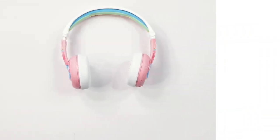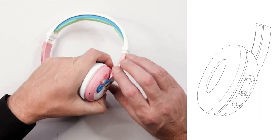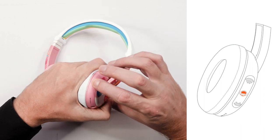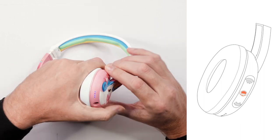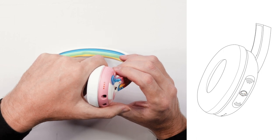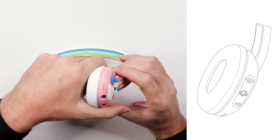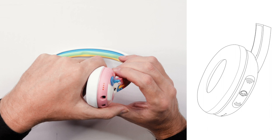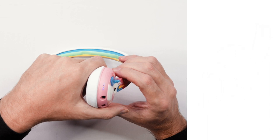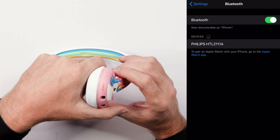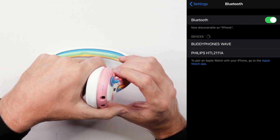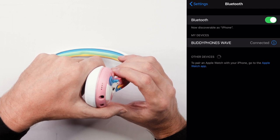Power on your BuddyPhones Wave by pressing the multi-function button for two seconds. The LED lights will flash red and blue to let you know the headphone is in pairing mode. Switch on your device. In the Bluetooth settings, select BuddyPhones Wave from the menu. The LED lights will now flash blue to show you the headphone is paired.